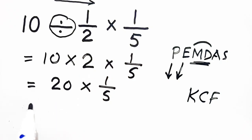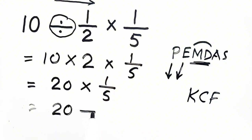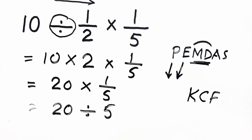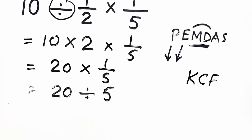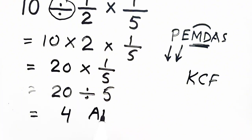Apply KCF again: keep it, change it, flip it. So 20 divided by 5 — it is now become simple. So it will be 4. So 4 will be our answer.